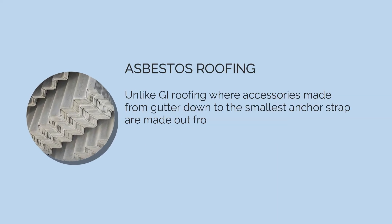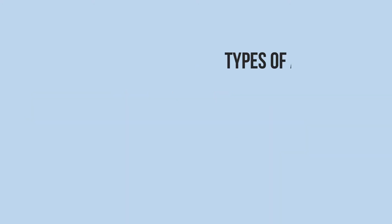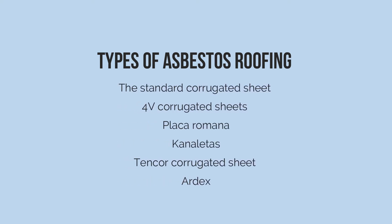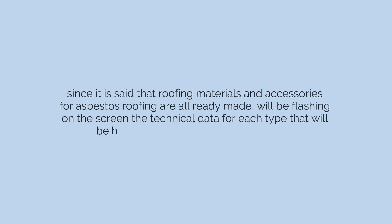Let us move forward to other common roofing materials. Beginning with asbestos roofing: unlike GI roofing where accessories are made from standard size, estimating asbestos roofing is much simpler because all roof accessories and parts are factory-made ready for installation. There are different kinds of asbestos roofing: standard corrugated sheet, 4V corrugated sheets, black aromana, canaletas, tenker corrugated sheet, and Ardex lightweight corrugated sheet. We will be flashing on screen the technical data for each type to help with our estimate computation.